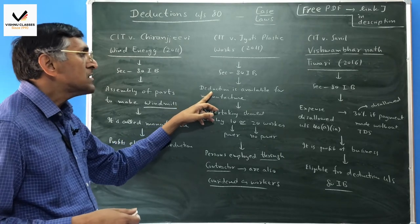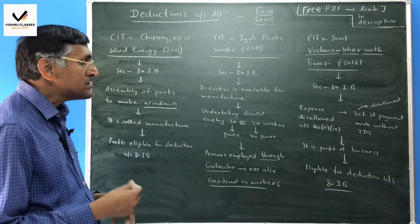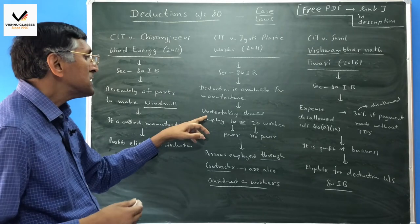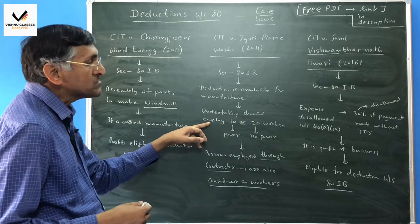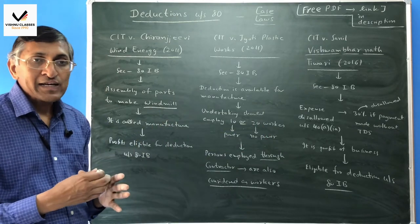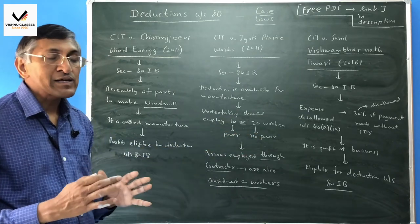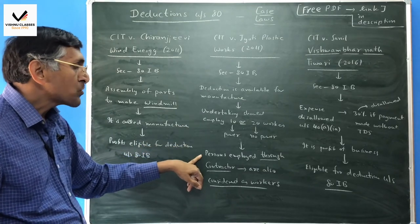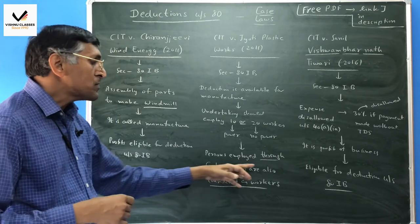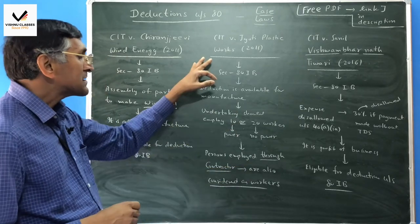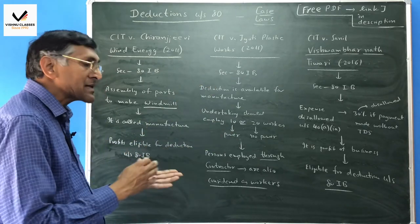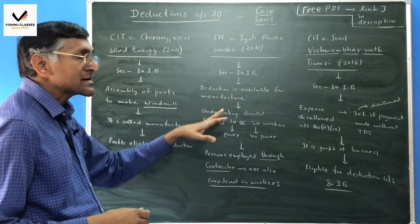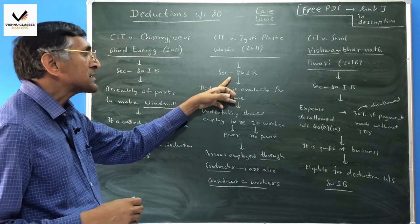In manufacturing business available under section 80IB, there is a condition that the manufacturing enterprise should employ minimum 10 or 20 workers. If you use power, then minimum 10 workers. If manual, then minimum 20 workers. The question is, if some workers are employed through a contractor, will they be considered? Yes. If you employ workers through a contractor, they will be counted in your company. The profits are eligible for deduction under section 80IB.